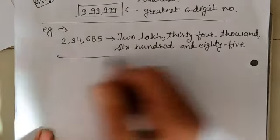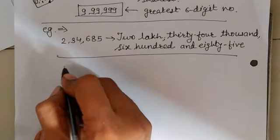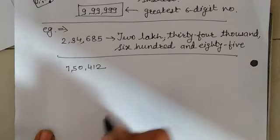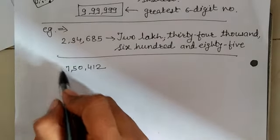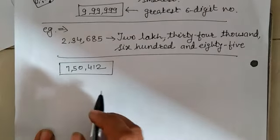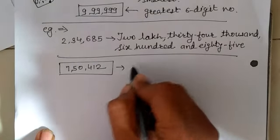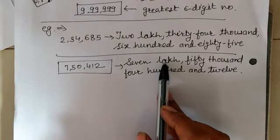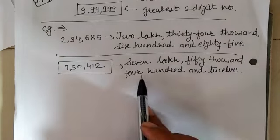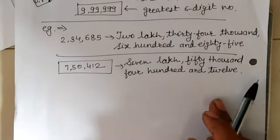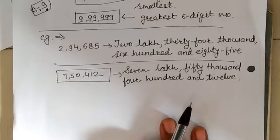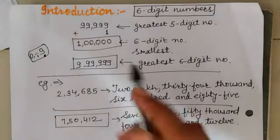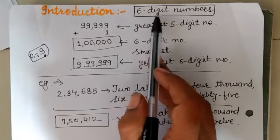Let's see another example. Suppose another number is 7,50,412 — 1, 2, 3, 4, 5, 6. This is also a 6-digit number, which we have also written in words: seven lakh fifty thousand four hundred and twelve. So students, in this problem set number 3 we are going to learn how to read and write 6-digit numbers.